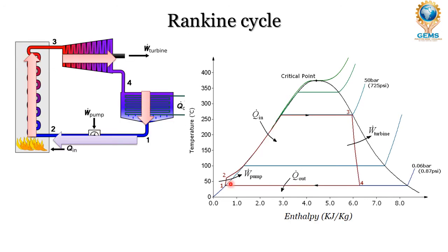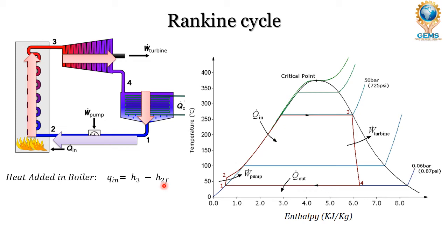Now let us see the positions and how heat is added, and what are the calculations of heat added, heat rejection, and efficiency. Heat is added in the boiler between points 2 and 3. In steam power plant applications, heat is calculated in the form of enthalpy because enthalpy is the total heat energy stored in the system.